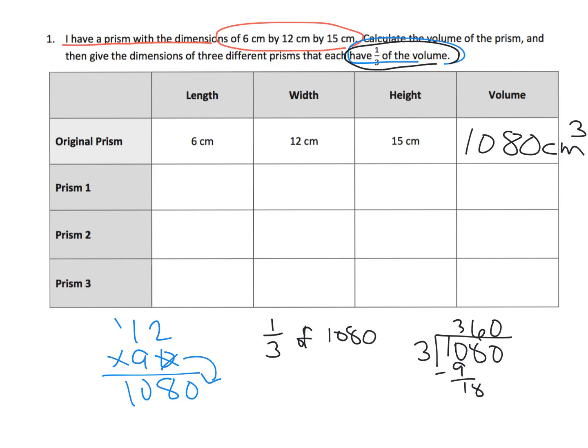So we want these three volumes to be 360 cubic centimeters. And it says just come up with any, because it says right here, calculate the volume of the prism, then give the dimensions of three different prisms that each have one-third of the volume. So we need to come up with three values that, when multiplied, you get 360.